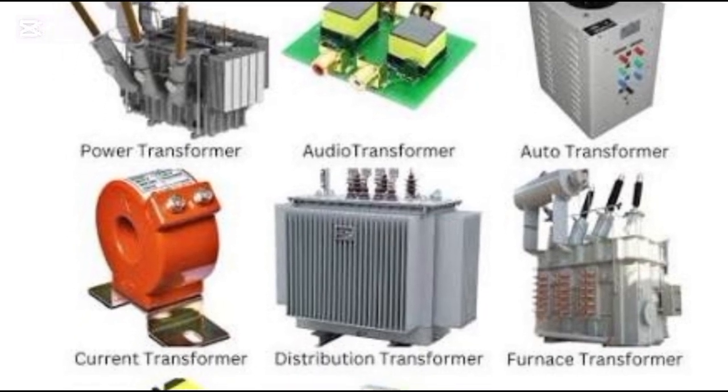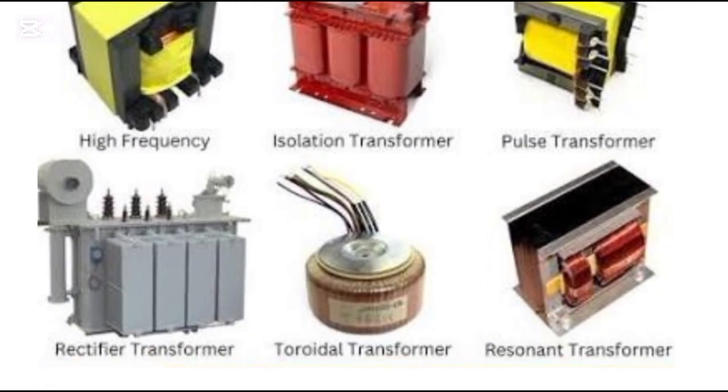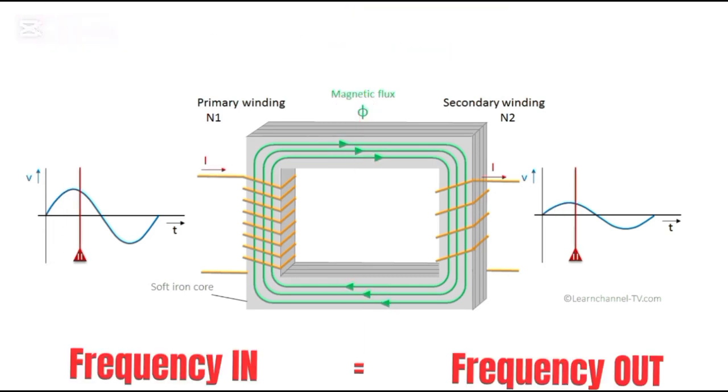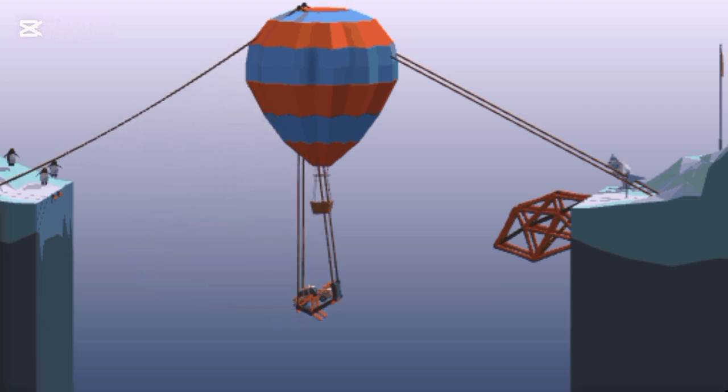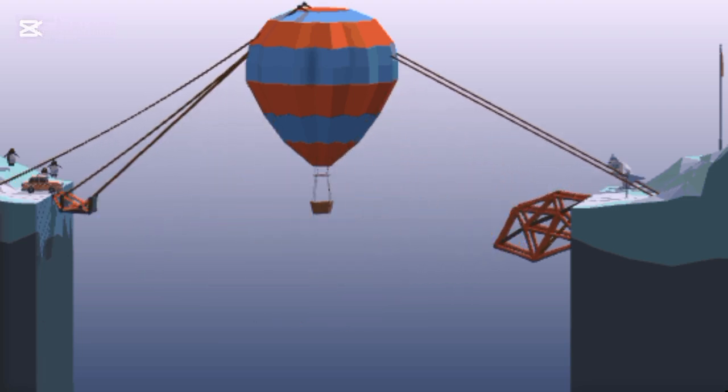A transformer is a device that transfers electrical energy from one circuit to another using magnetic fields, without any physical connection and without changing the frequency of the power. Think of it as a bridge that changes the height of electricity's pressure, its voltage, so it can travel safely and efficiently.